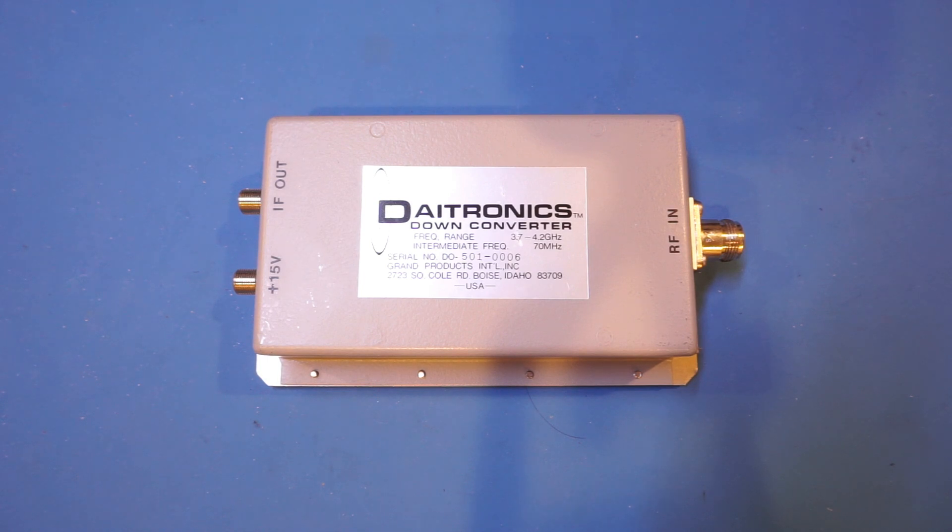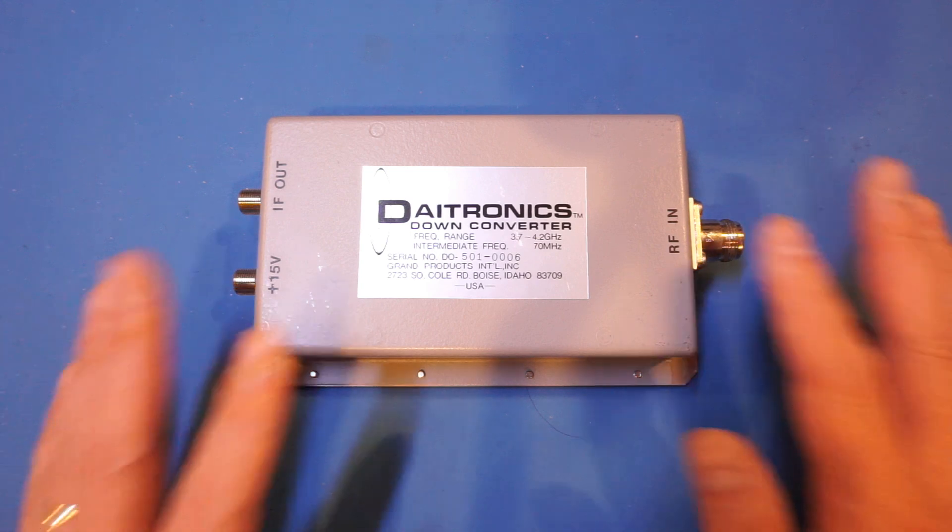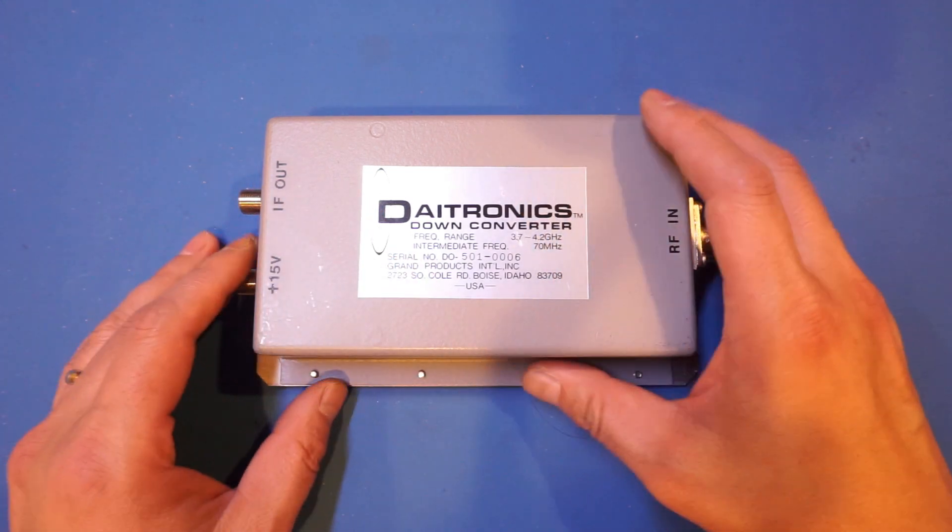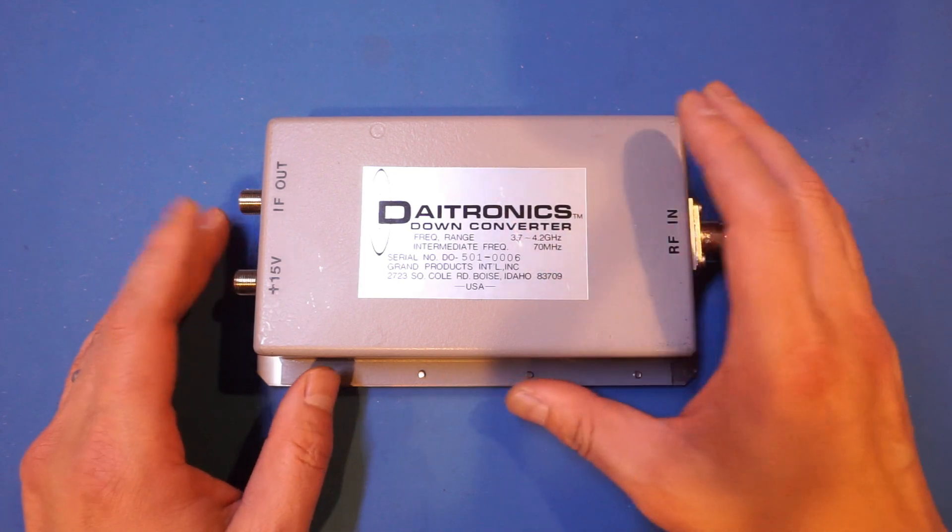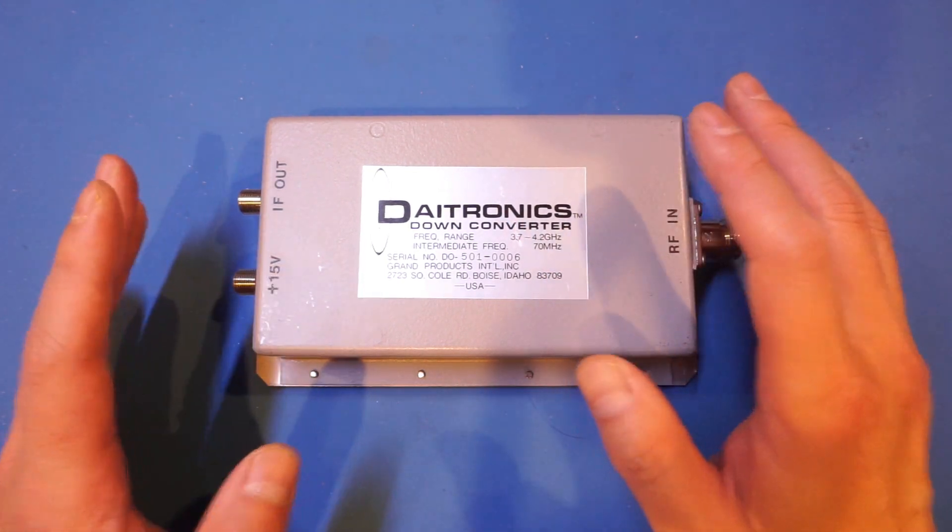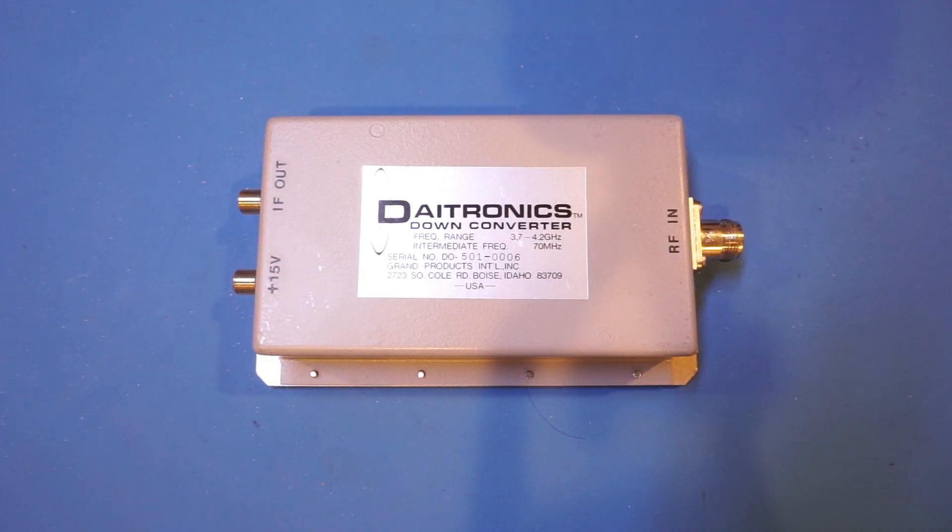By looking at this downconverter box though, it doesn't seem like there's any way to adjust or tune the LO, or local oscillator's frequency. So I'm guessing that the unit was probably designed for a very specific use and tuning is done at the factory. So we will see what the input frequency corresponds to the 70 MHz IF.